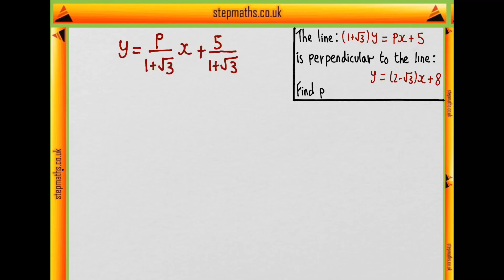So let's work out the gradient of both the lines to begin with and then we can implement that. Well if we just divide through by 1 plus root 3 we get the standard form of a line and we know the gradient is p over 1 plus root 3. So by what we mentioned earlier we know p over 1 plus root 3 is equal to minus 1 over 2 minus root 3 because they're perpendicular.